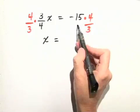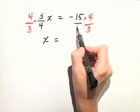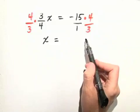x is equal to negative 15, and I'm going to write that as negative 15 over 1 times 4 thirds.